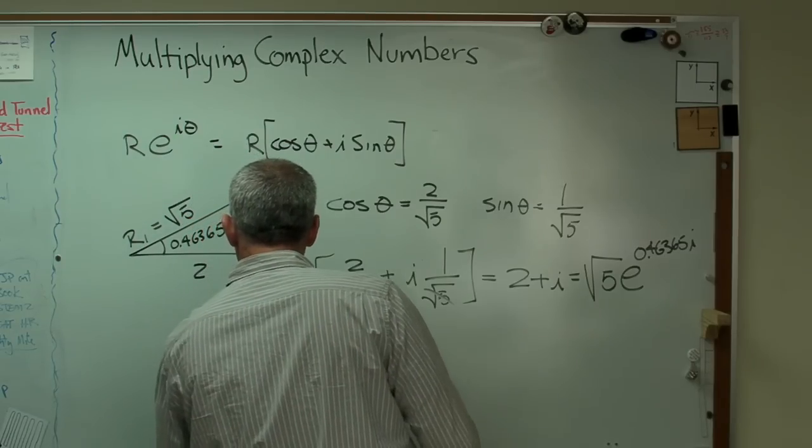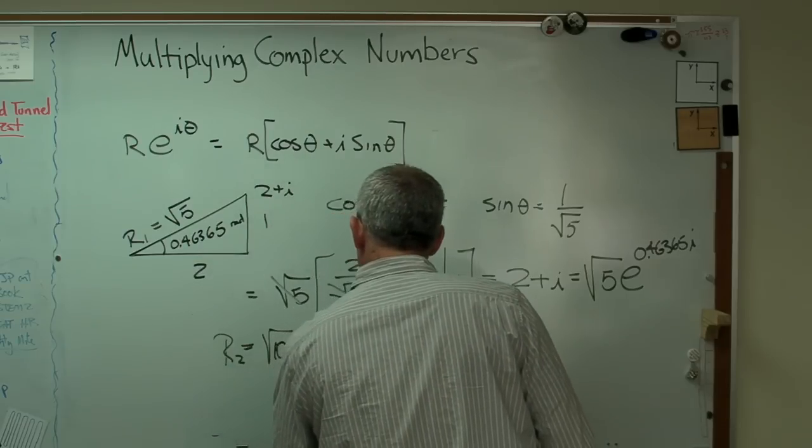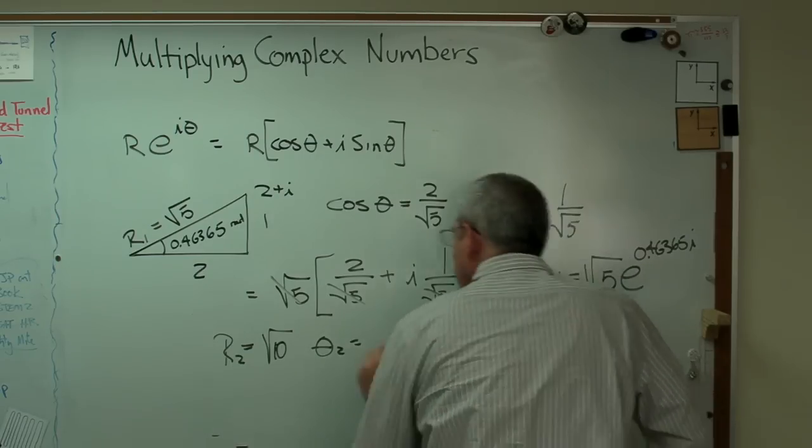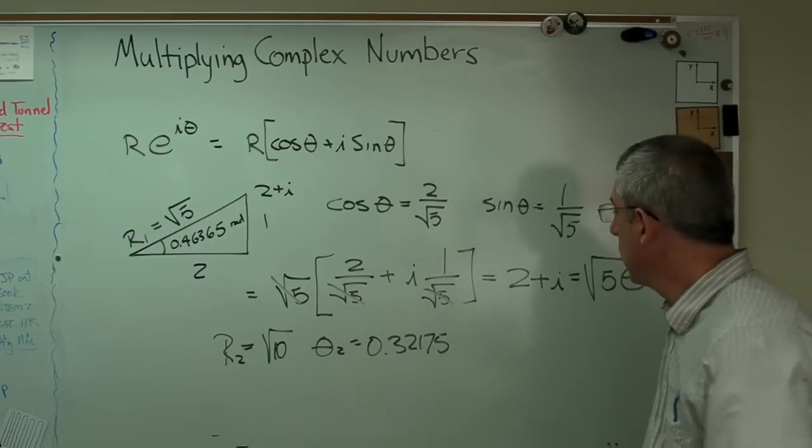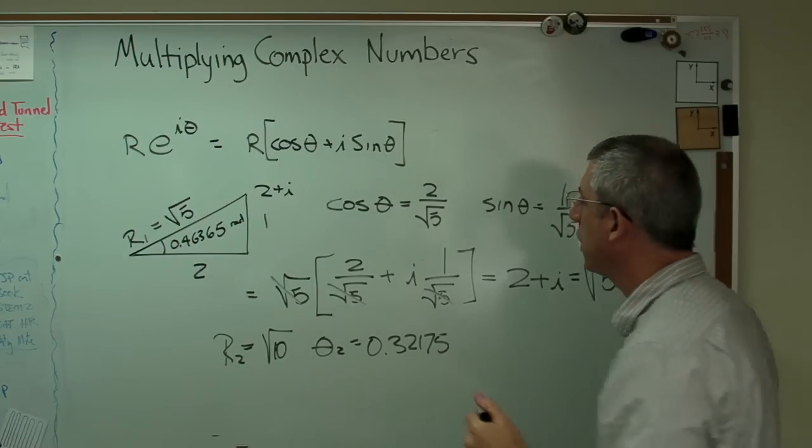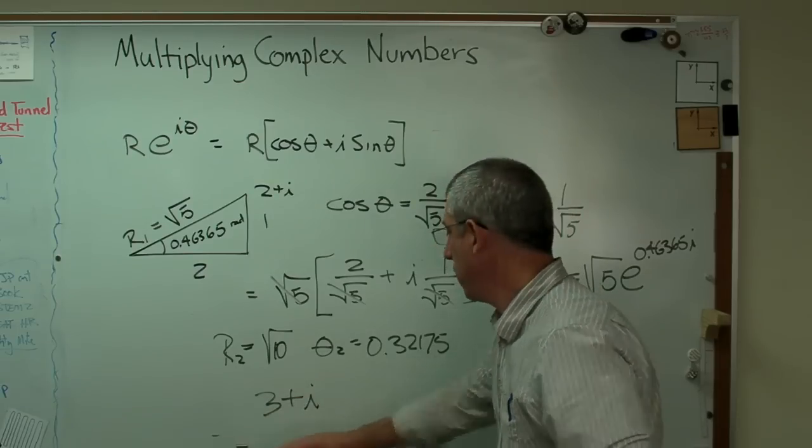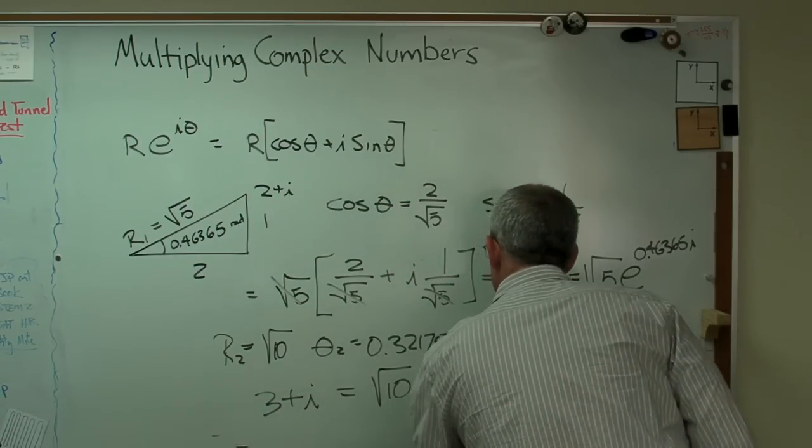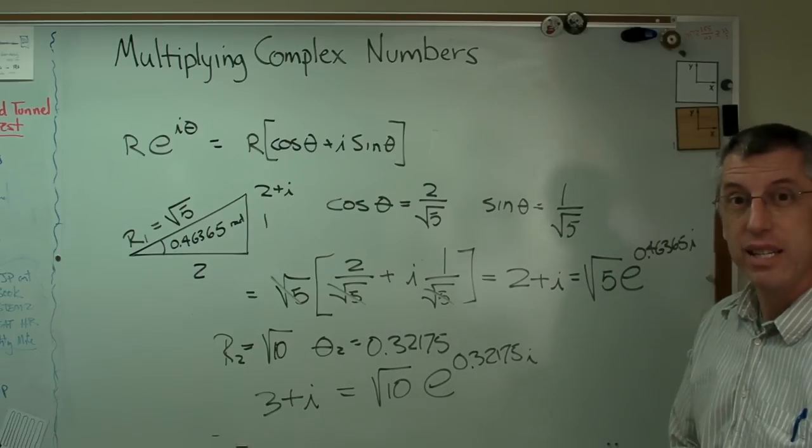Let's call that r1, and I'll call that theta 1 right there. And let's write r2 and theta 2. Well, r2 equals, we said that was a square root of 10, and theta 2 equals 0.32175i. So that means, if that was z1 was my first complex number, z2, 3 plus i, equals square root of 10 e to 0.32175i power. So far, so good.